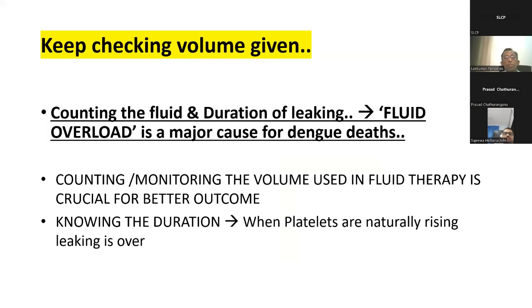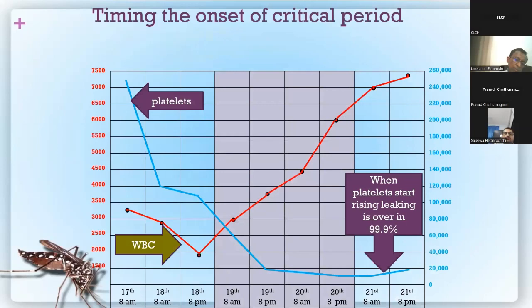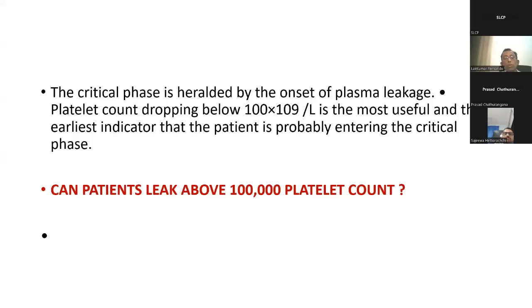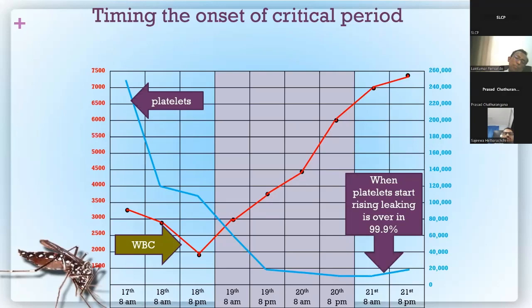Keep counting the total volume given and know the duration. Another important parameter: when your platelet count starts rising on two consecutive measurements, leaking is essentially over — regardless of whether you thought 48 hours had elapsed. Even if effusions are still present or increasing, rising platelets indicate the leak has stopped. We hardly ever give platelets these days; the rising platelet count itself signals end of the critical phase.